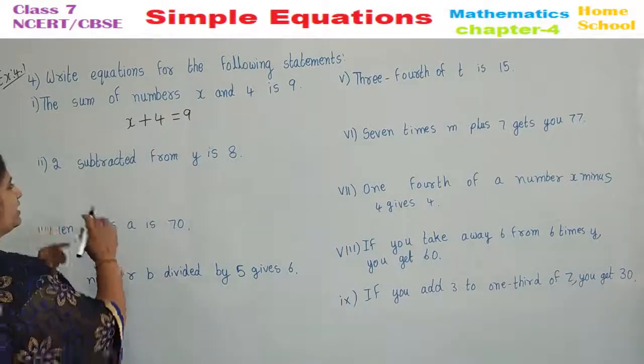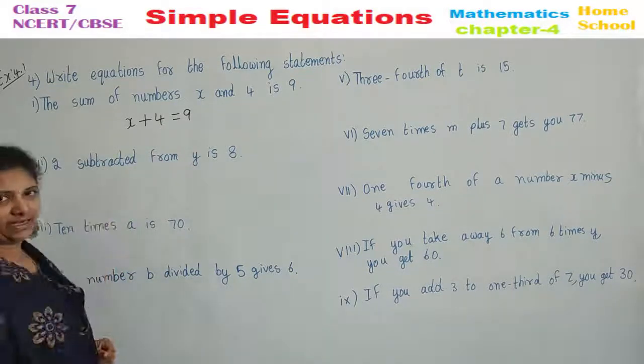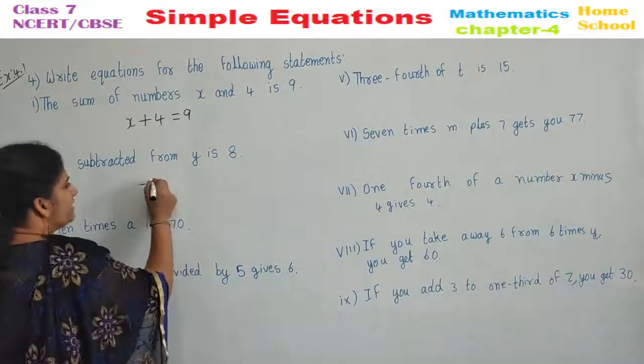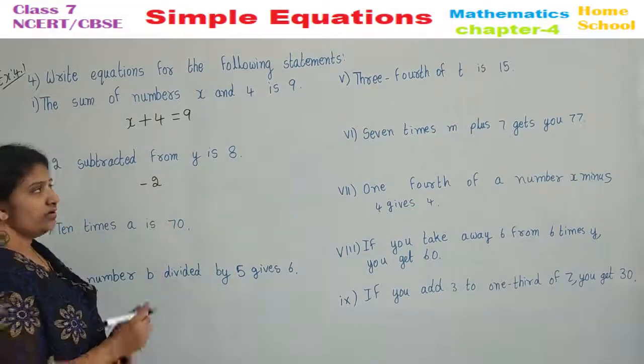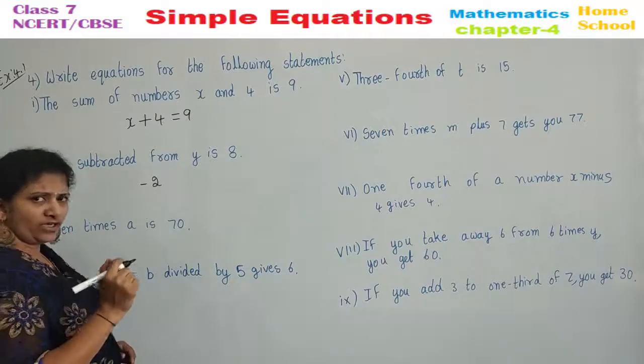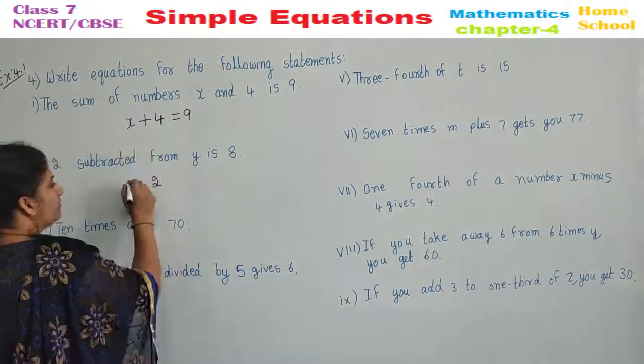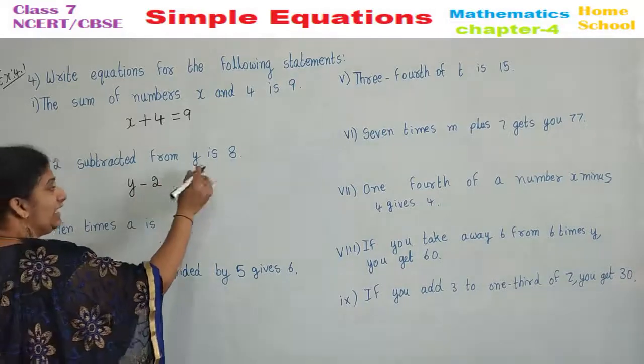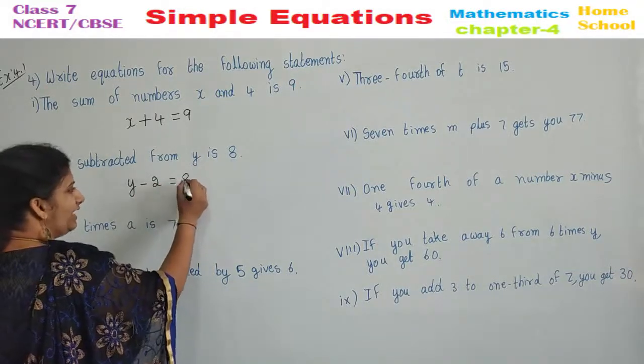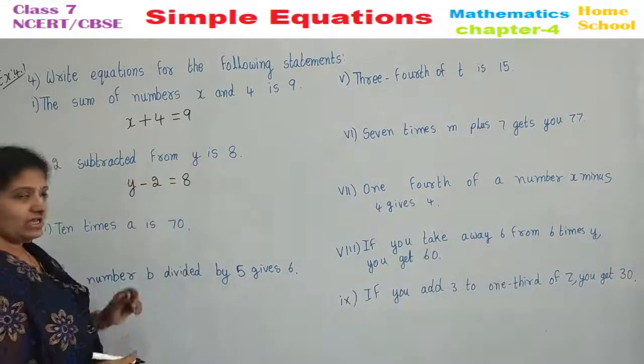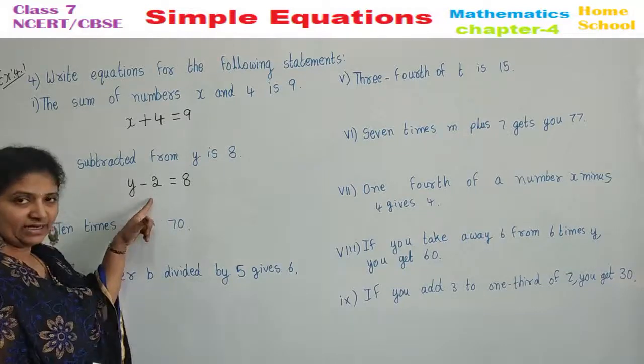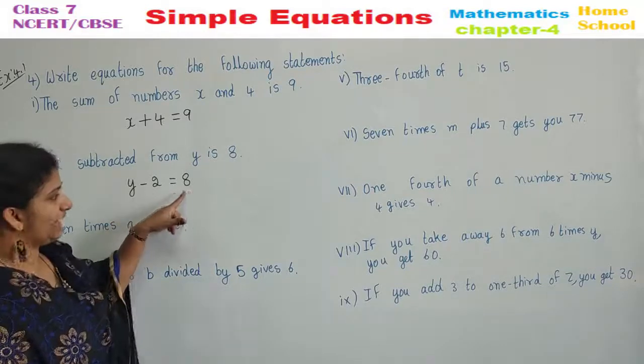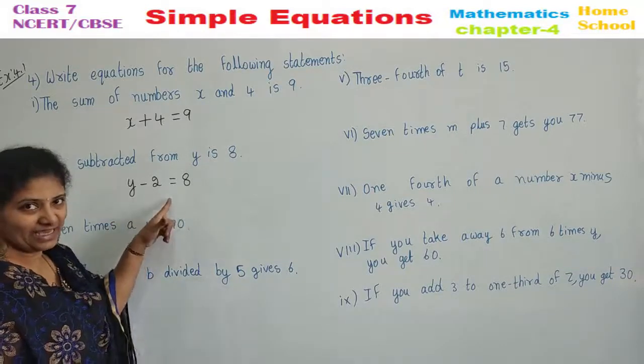See the second one. 2 subtracted. 2 is subtracted. Minus 2. From. From what? From Y. 2 is subtracted from Y. Is equal to 8. 2 is subtracted from Y to get 8. Is 8.